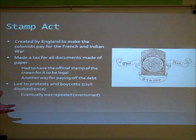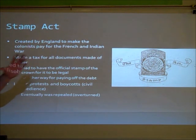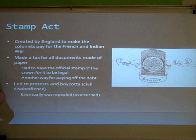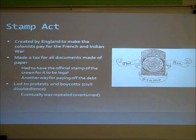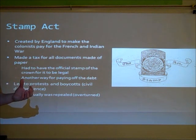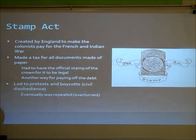Another cause of the revolution was the Stamp Act, created by England to make the colonists pay for the French and Indian War. The first tax was the Stamp Act, which made a tax on all documents made of paper — they had to have the official stamp of the crown to be legal. This led to protests and boycotts, which is civil disobedience — going against a policy in a non-violent way. Eventually this act was repealed because the colonists showed so much discontent for it.